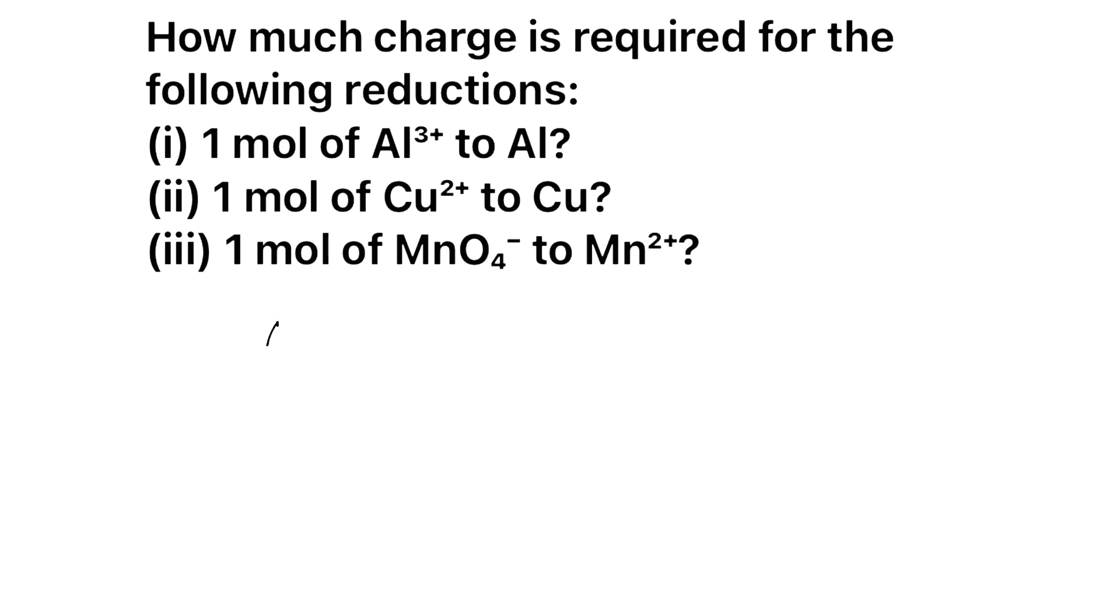Coming to the third question. Regarding third question, it is MnO₄⁻ becoming Mn²⁺. See, first of all we have to find the oxidation state of Mn in MnO₄⁻. So put X. X plus for oxygen, four oxygen is there and each oxygen oxidation state is minus 2, and what is the total charge? Minus 1. So X is equal to 7 plus.